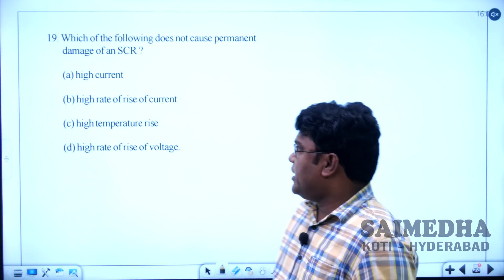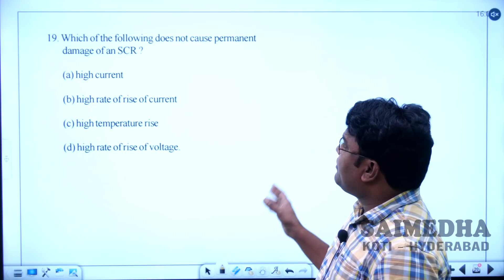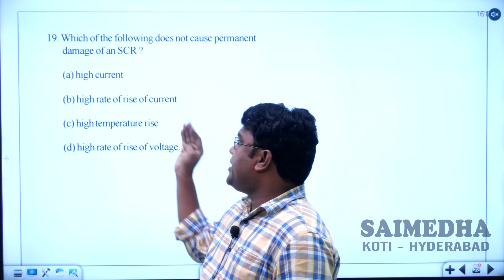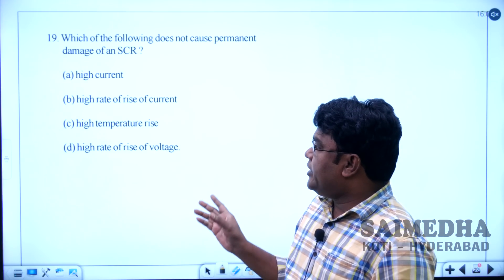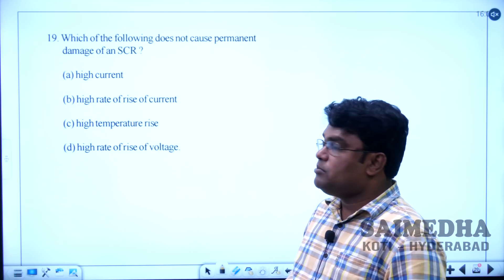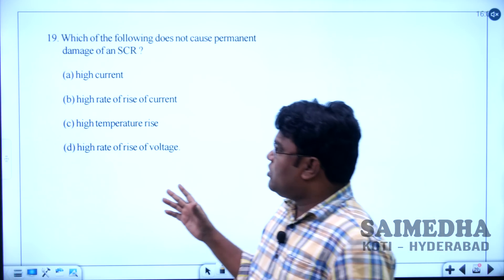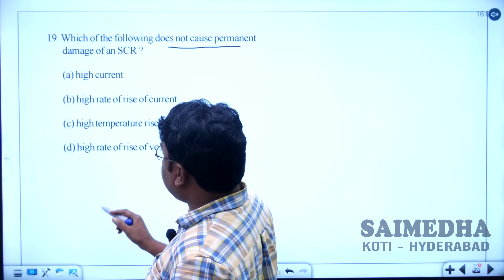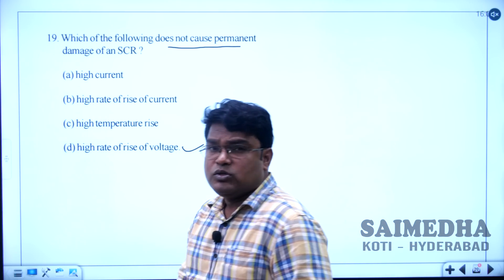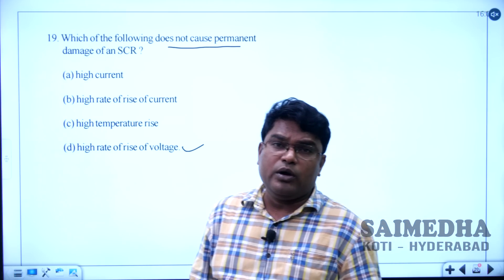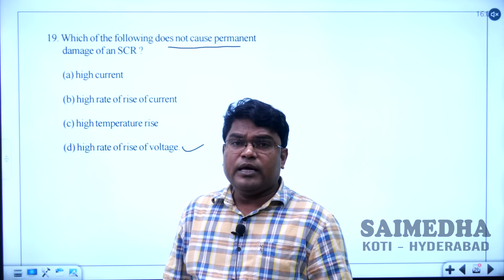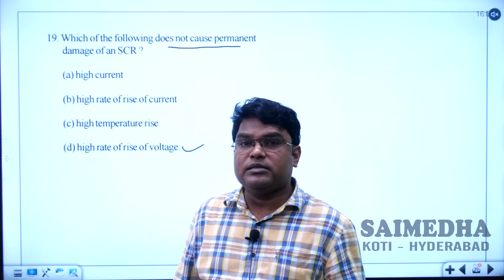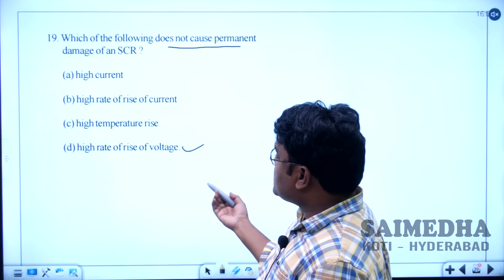Let us solve question number 19. Which of the following does not cause permanent damage of an SCR — high current, high rate of rise of current, high temperature, or high rate of rise of voltage? Due to high rate of rise of voltage, the SCR gets turned on unwantedly — that is a false turn-on of the SCR, which is not permanent damage. So high rate of rise of voltage is the correct option.